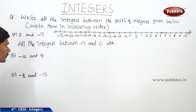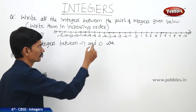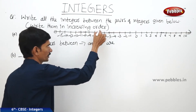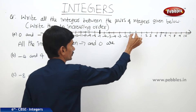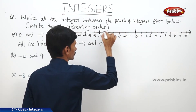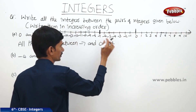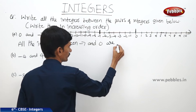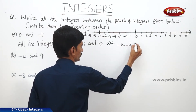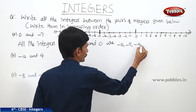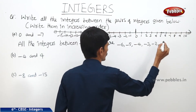The integers between minus 7 and 0 are: minus 6, minus 5, minus 4, minus 3, minus 2, minus 1.